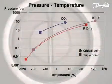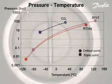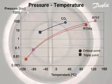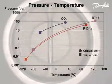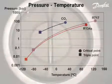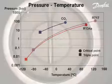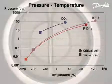When compared with commonly used refrigerants R134A and R717, CO2 has some unique characteristics. It operates at a much higher pressure, but across a narrower temperature range than both R134A and R717.